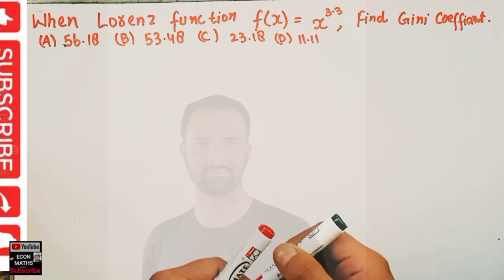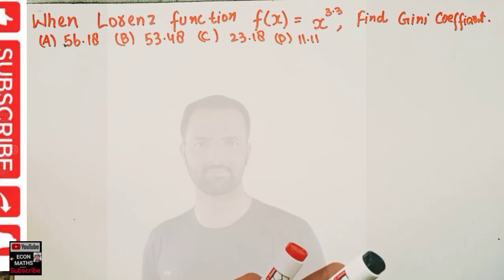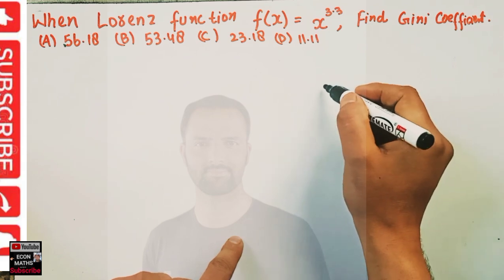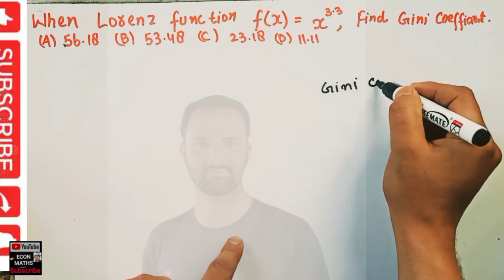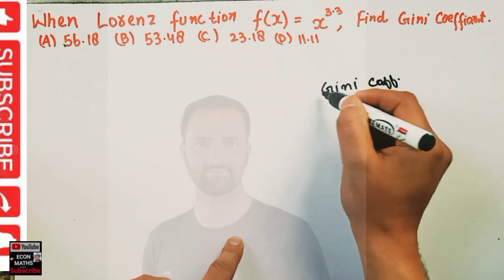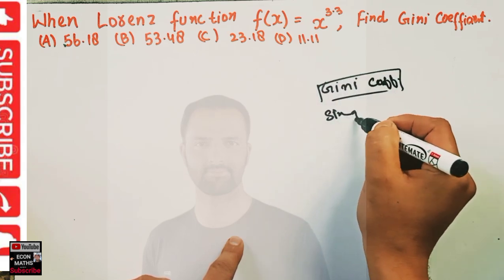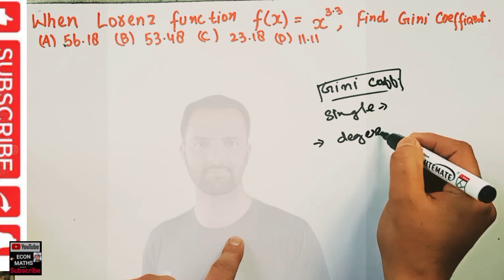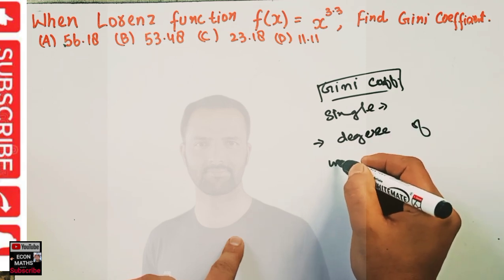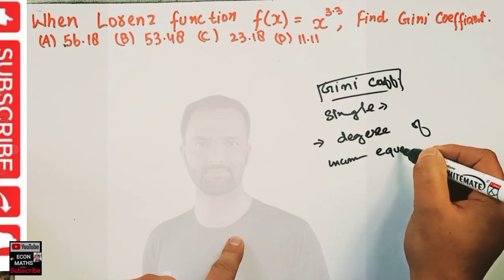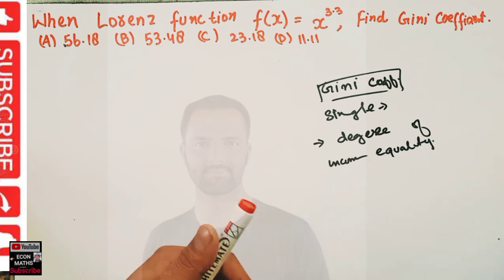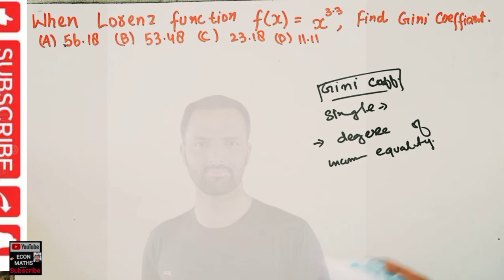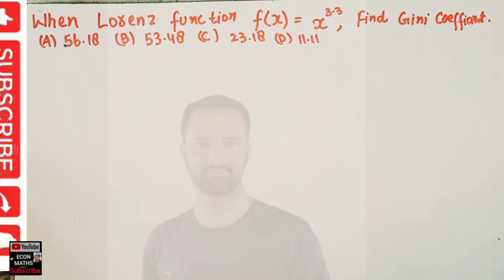The Gini coefficient is a single number which demonstrates the degree of income inequality in a country. So this Gini coefficient is a single number which depicts the degree of inequality in a country.